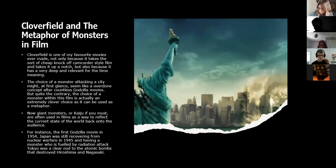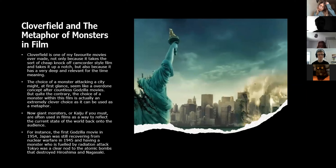Giant monsters, or kaiju, are often used in films as a way to reflect the current state of the world back onto the audience. For instance, when the first Godzilla movie came out in 1954, Japan was still recovering from the nuclear bombings by America in 1945. So having a monster who is literally fuelled by radiation attack Tokyo was a clear nod to the fear that was still lingering after the bombings of Hiroshima and Nagasaki.